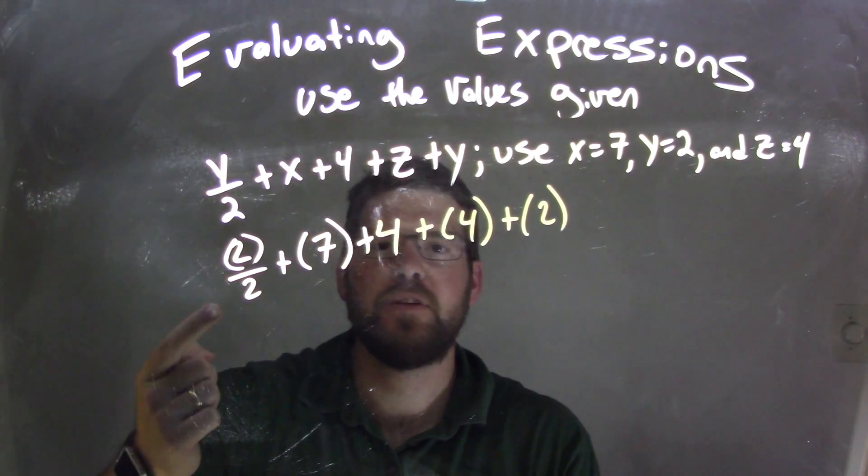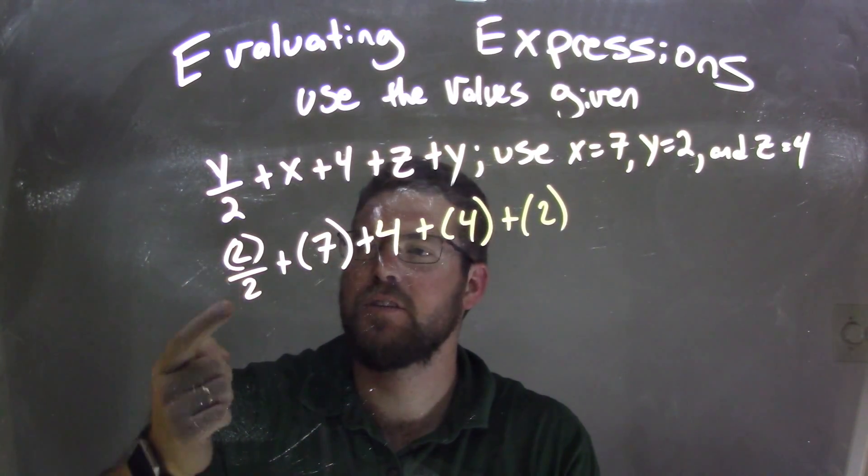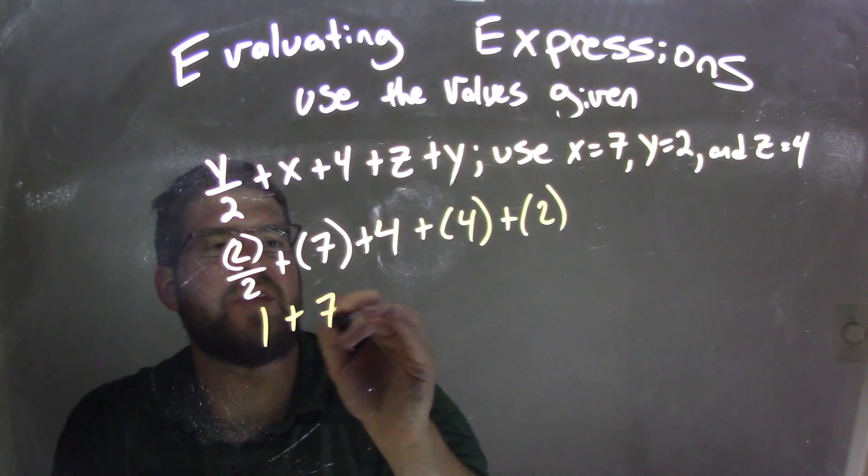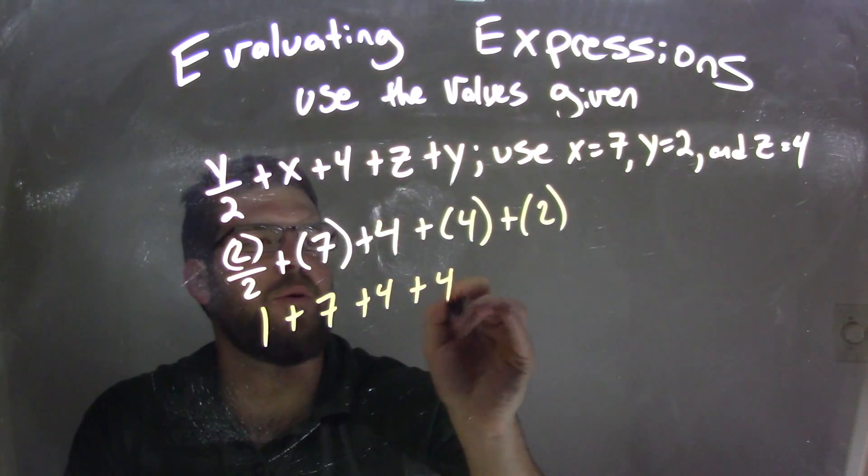So now we need to simplify. Well, division is one of the highest orders, so 2 divided by 2 is 1. 1 plus 7 plus 4 plus 4 plus 2.